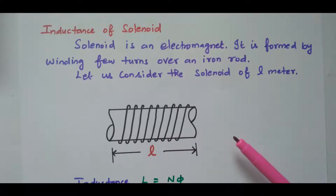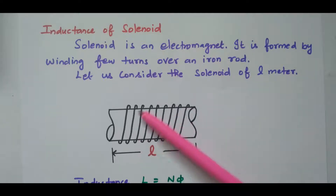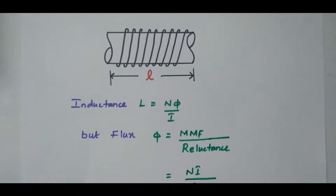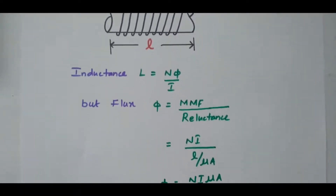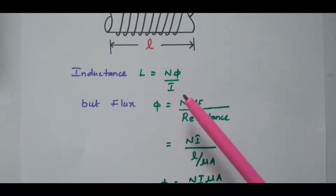Now we are going to identify the expression for inductance of this solenoid. Consider the solenoid with length l meters. In general, the inductance L is given by L equal to N Φ divided by i. The general formula for inductance is N Φ by i.